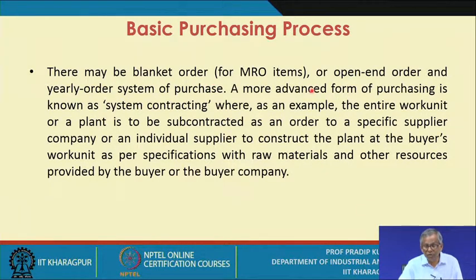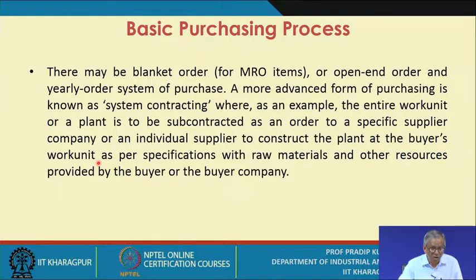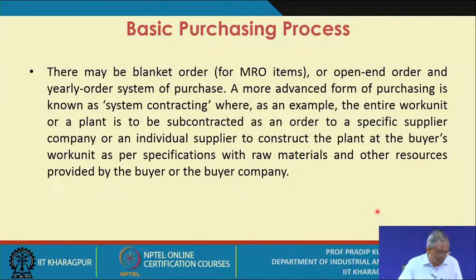There may be a blanket order for MRO items, an open-end order, or a yearly order system of purchase. A more advanced form of purchasing is known as systems subcontracting, where the entire work unit or plant is subcontracted as an order to a specific supplier company or individual supplier to construct the plant at the buyer's work unit, as per specifications with raw materials and other resources provided by the buyer. This is a special type of purchase known as systems contracting or systems subcontracting.